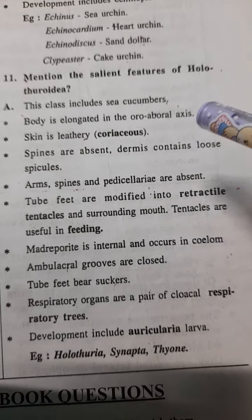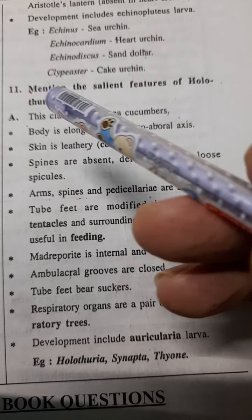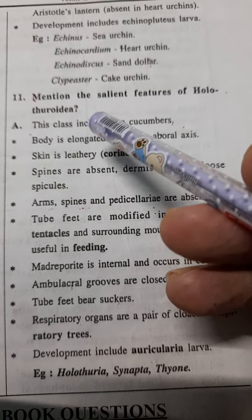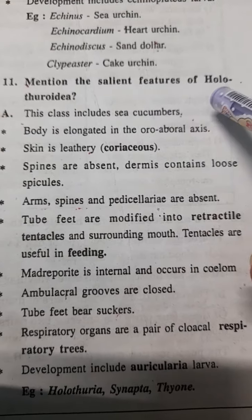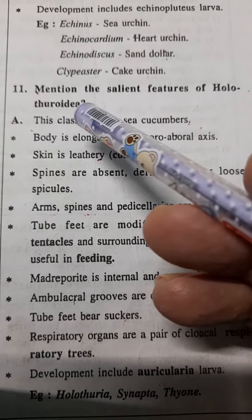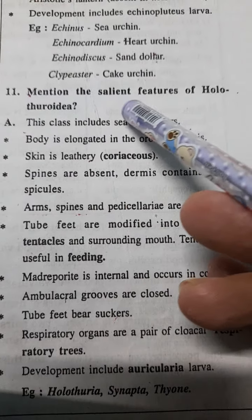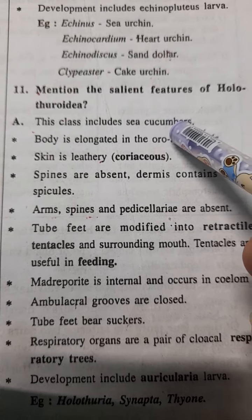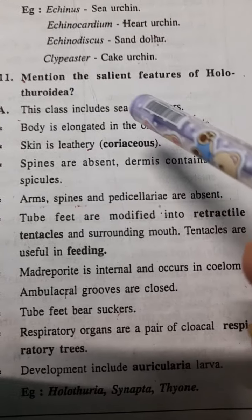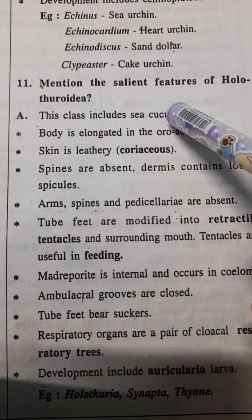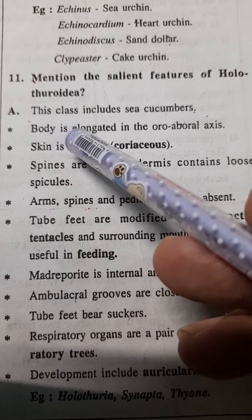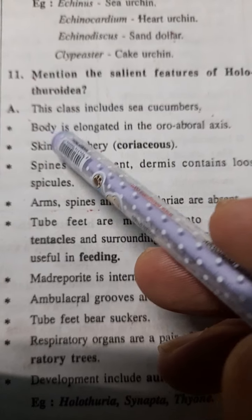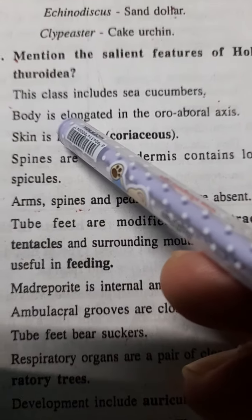Hello, good morning. This is the last 11th question of animal diversity, for four marks: mention the salient features of Holothuridia. This class includes sea cucumbers. The body is elongated in the oro-aboral axis.